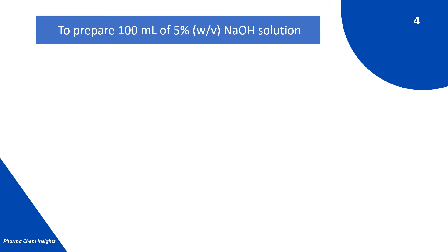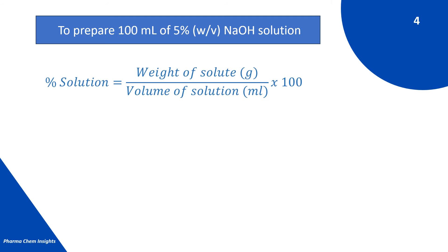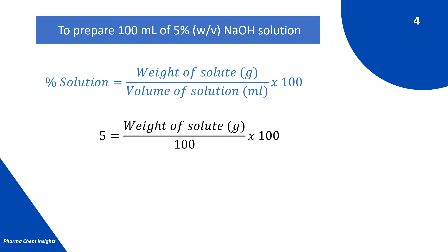Similarly, to prepare 100 ml of 5% weight by volume NaOH solution, using the same formula: percent solution equals weight of solute in grams divided by volume of solution in ml, multiplied by 100. Putting in the values: 5 equals weight of solute in grams divided by 100 ml, multiplied by 100. The 100 and 100 cancel each other out.